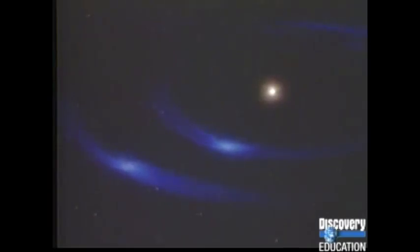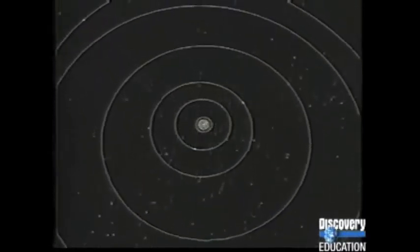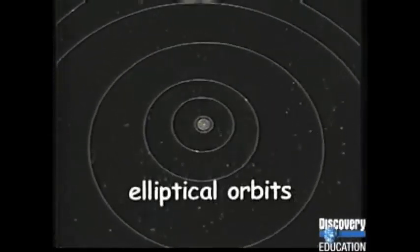It took about 100 million years for the solar system to form. The solar system is made up of a central star, nine planets, over 60 moons, and many thousands of asteroids and comets. The Sun's gravity keeps all the other objects in the solar system in regular orbits around it.